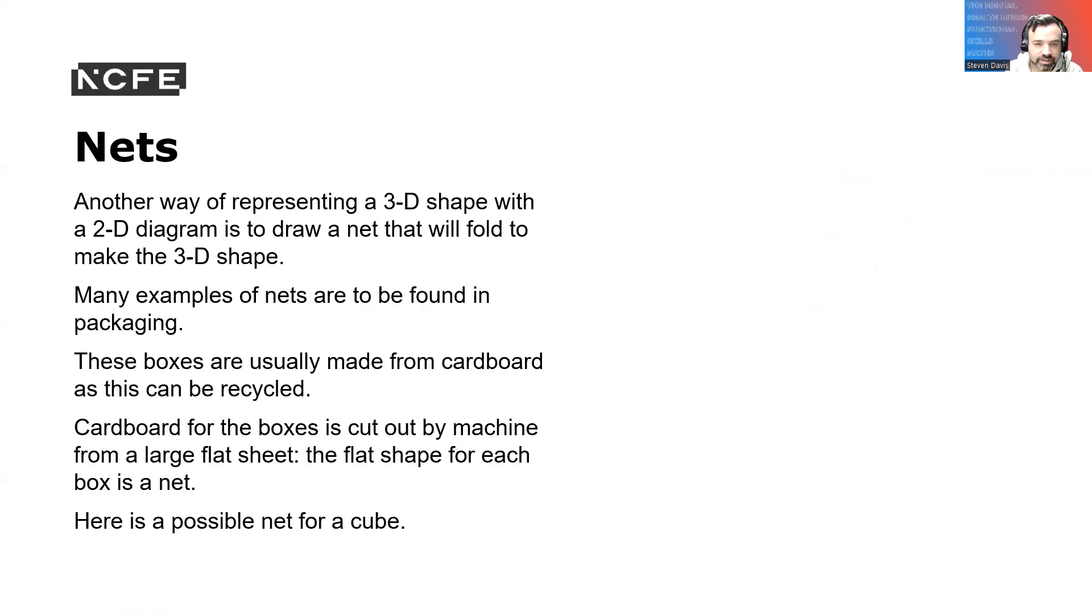So nets. Another way to represent 3D shapes in 2D diagrams is to draw a net. This will fold to make the 3D shape. Many examples of nets are to be found in packaging. The boxes are usually made from cardboard, and this can be recycled. Cardboard boxes can be cut by machine from a large flat sheet. The flat shape for each box is a net. And here's a possible net for a cube.